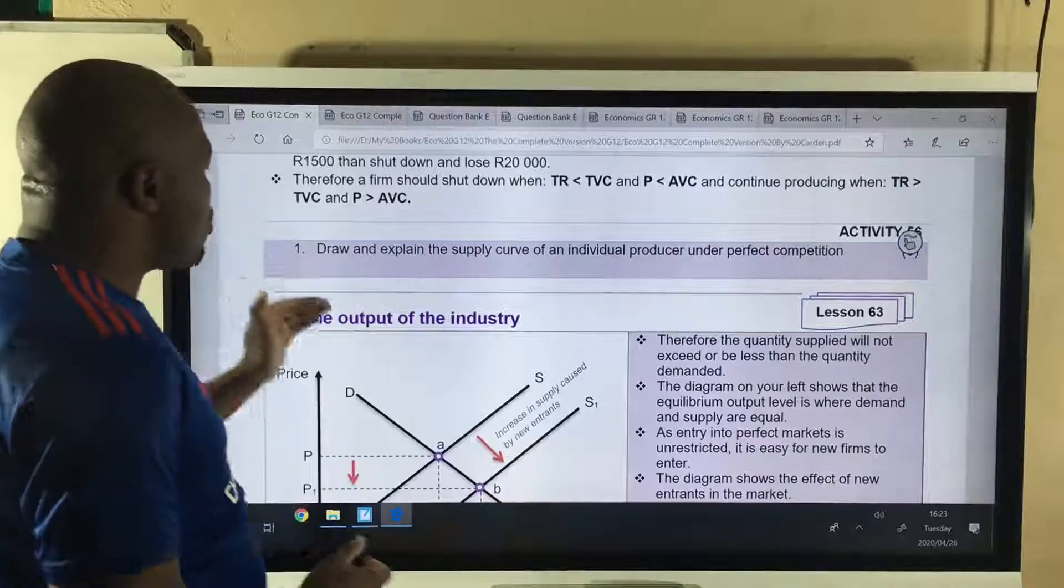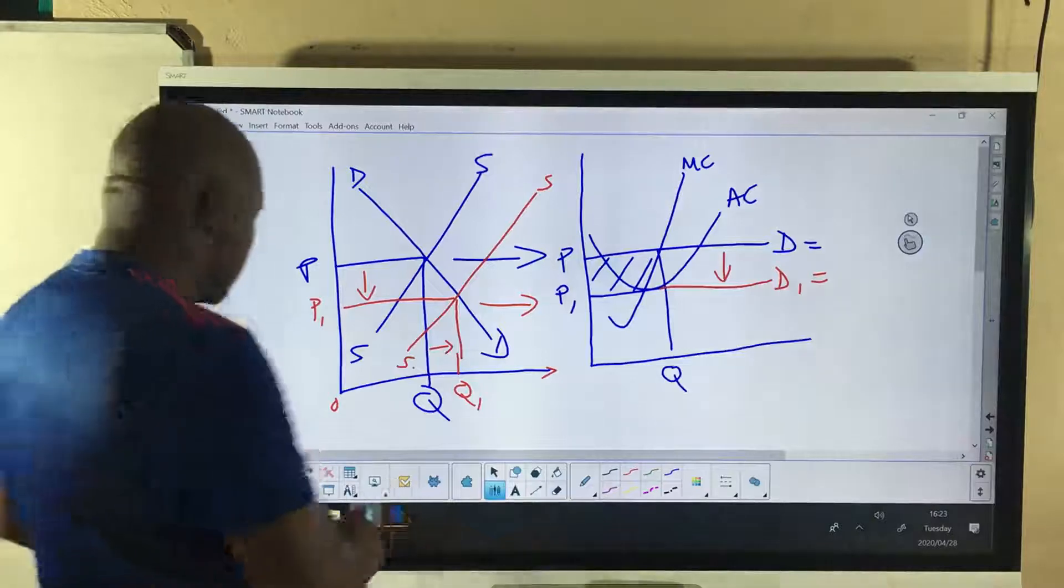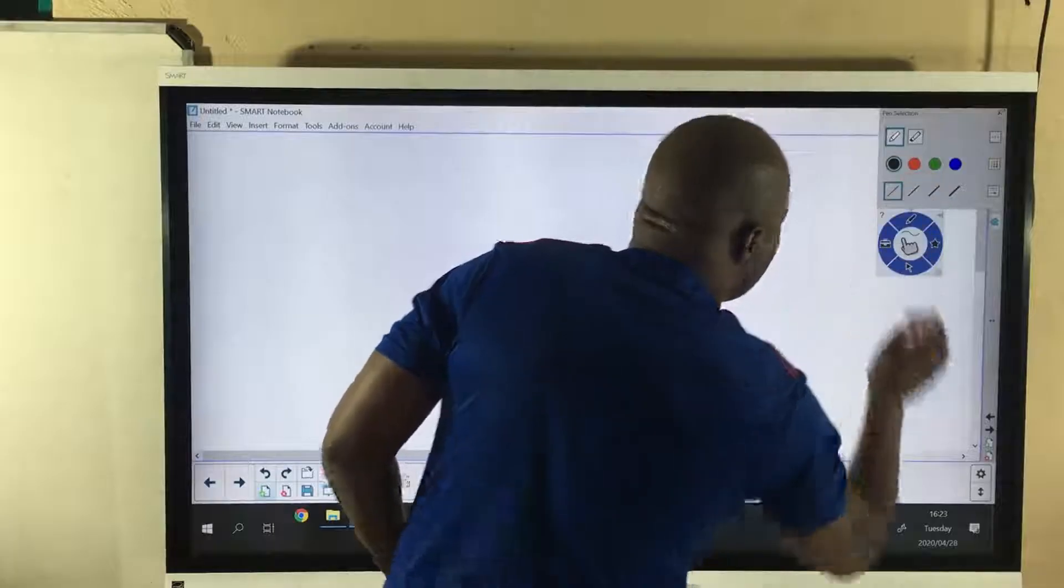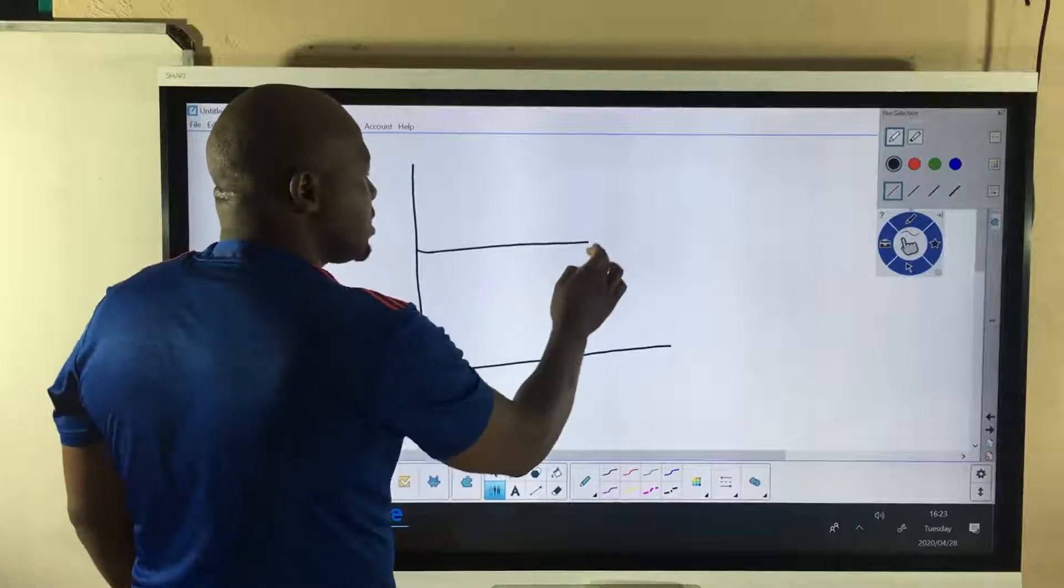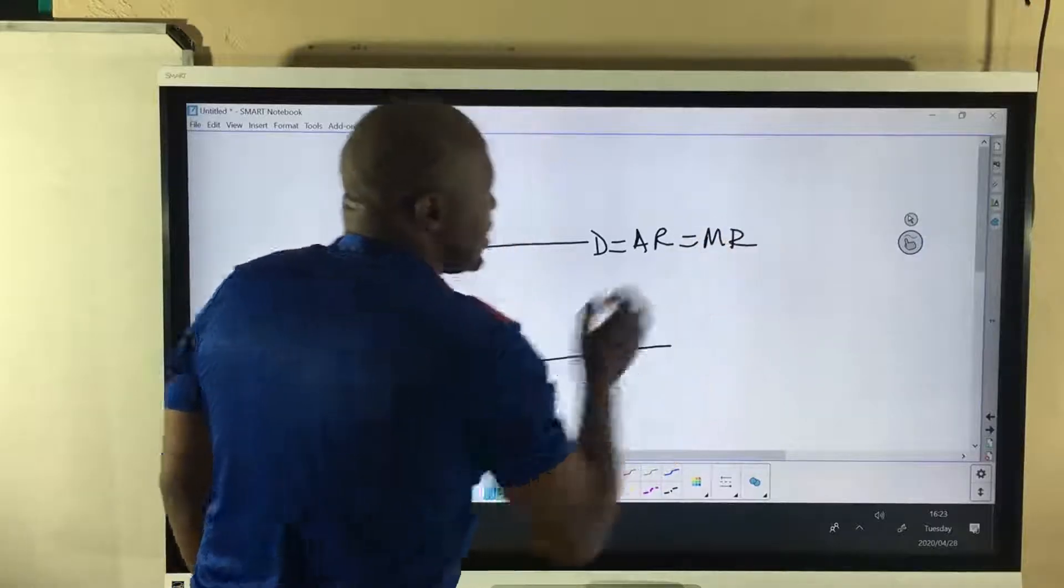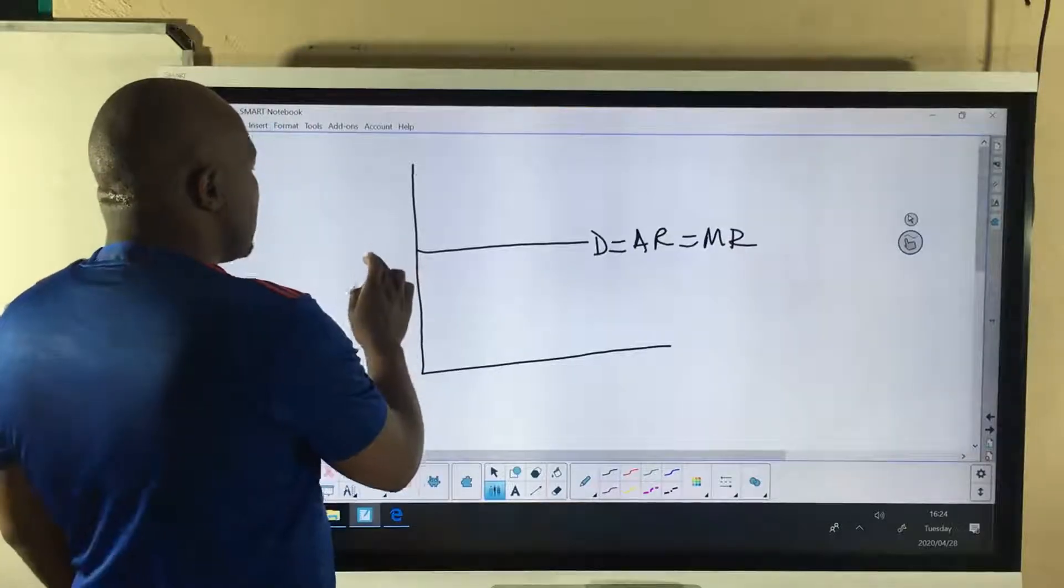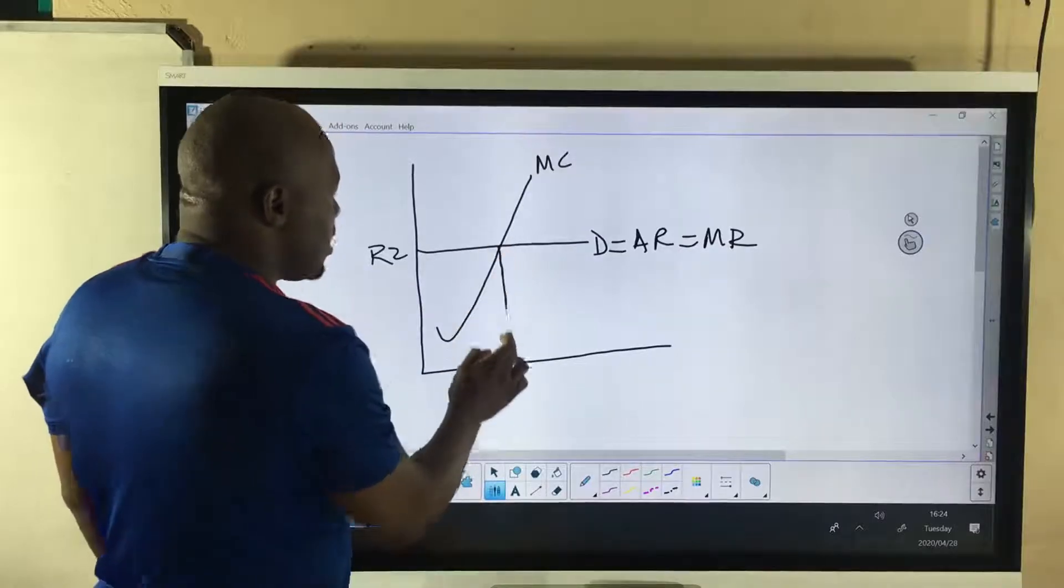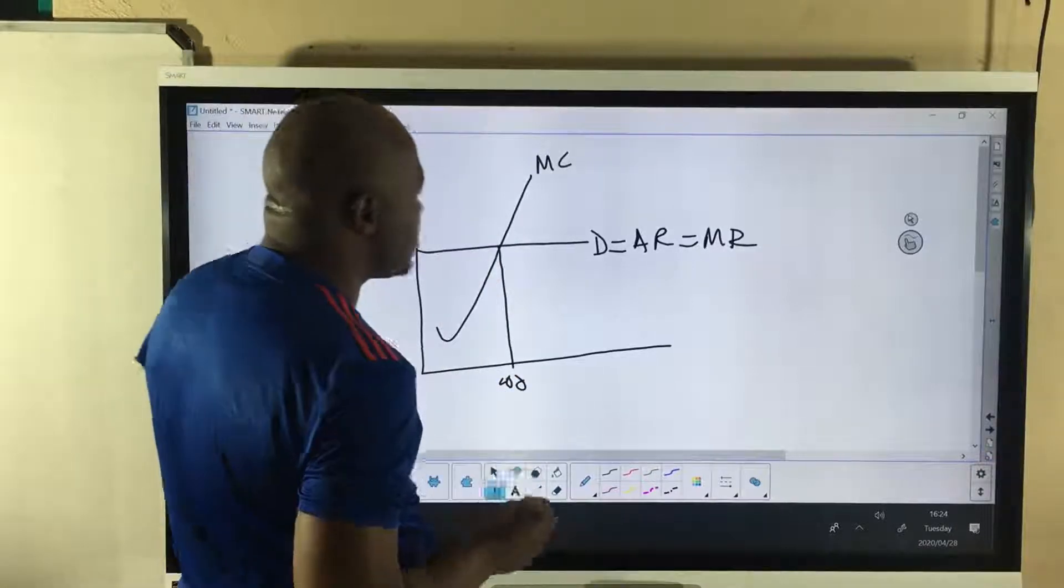So the question said, draw and explain the supply curve of an individual producer under perfect market. Under perfect market, for I don't know how many thousand times, I'm drawing this graph. The demand curve is horizontal. D is equal to AR, which is equal to MR. So this is our price.